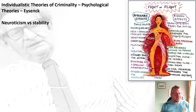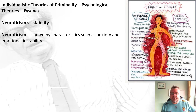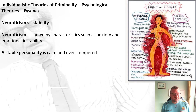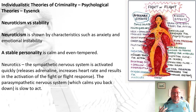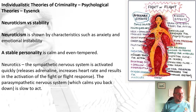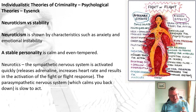When we get to the neuroticism versus stability scale, neuroticism is shown by characteristics such as anxiety and emotional instability, while a stable personality is much more calm and even-tempered. Eysenck thought that neurotics — we all have a fight-or-flight response linked to our sympathetic nervous system, which is activated quickly when we encounter something new or dangerous, releasing adrenaline and increasing heart rate.